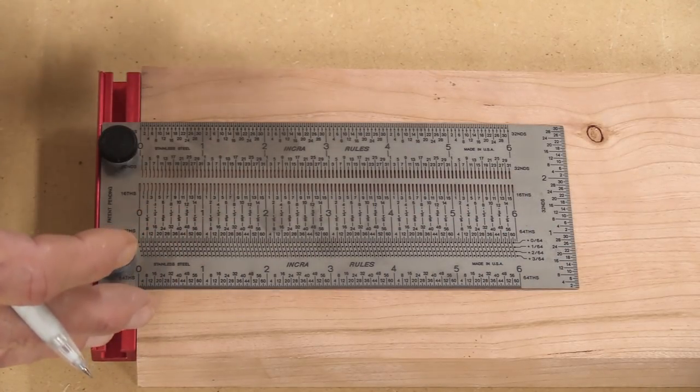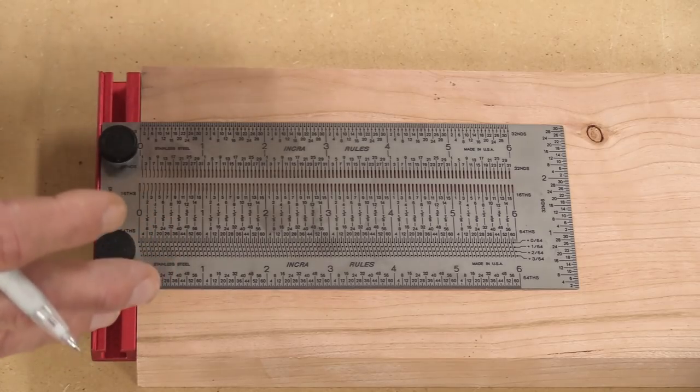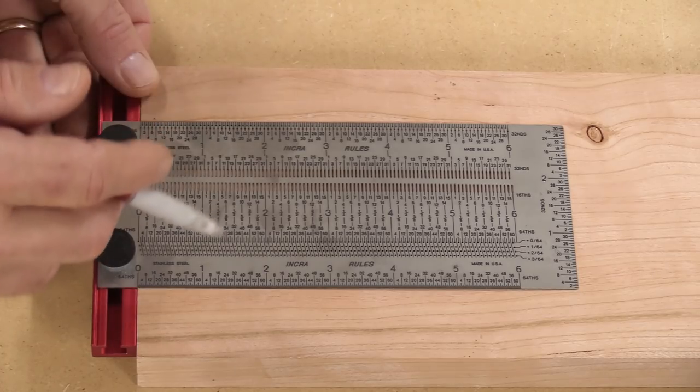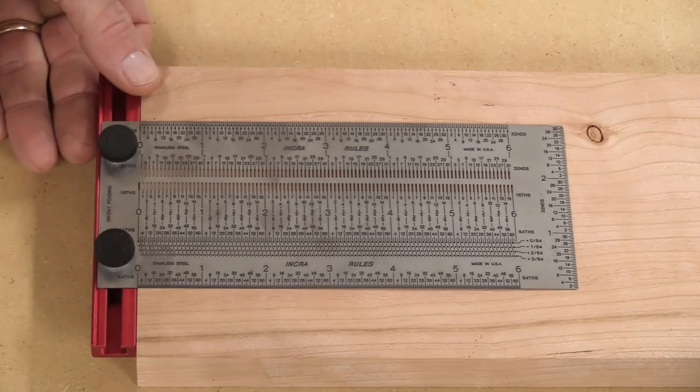Next up is the Precision T-Rule, and this is by far the most used marking tool I have in my shop. And like the other products I showed you before, there's multiple holes and slots to mark out different things. Let me zoom in a little bit closer, and I can show you exactly what all these are.